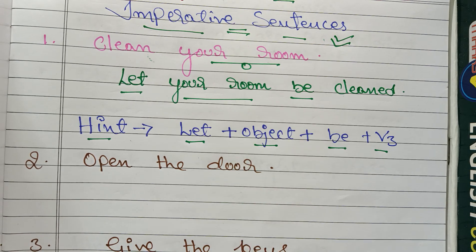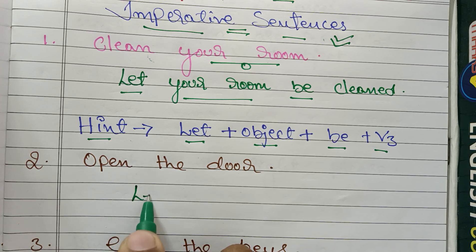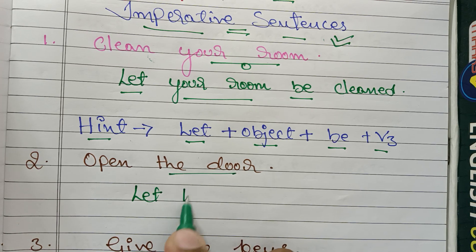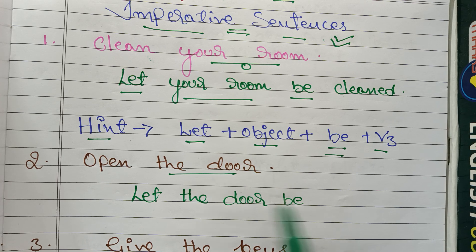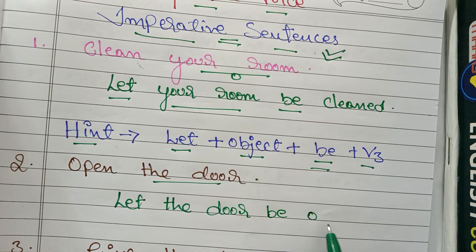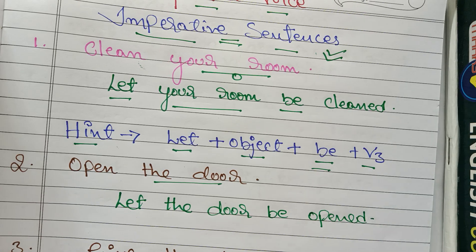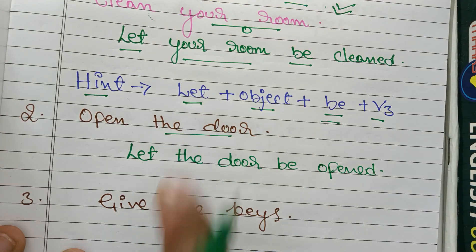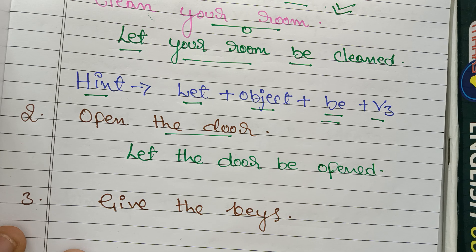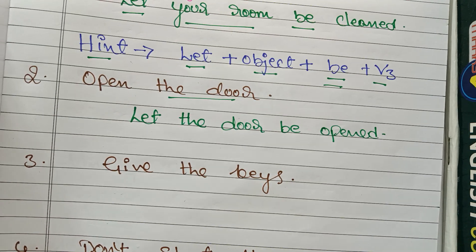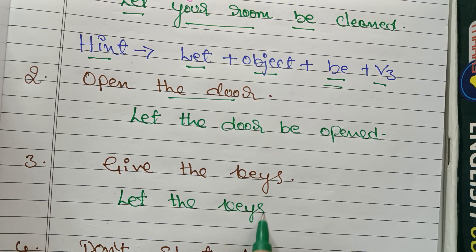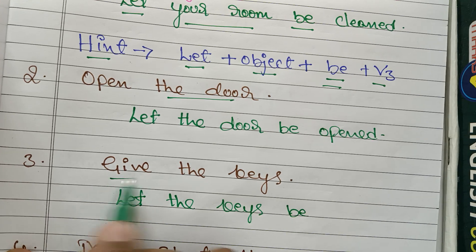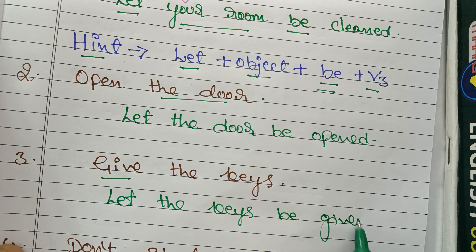Based on this hint, let us solve the second one: 'Open the door.' How to change? Let + the door + be + opened. And the third one: 'Give the keys.' Let the keys be given. Use Let + object + be + V3.